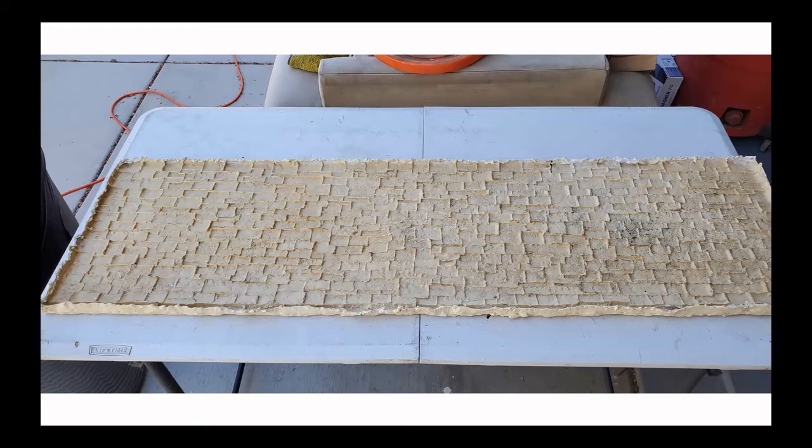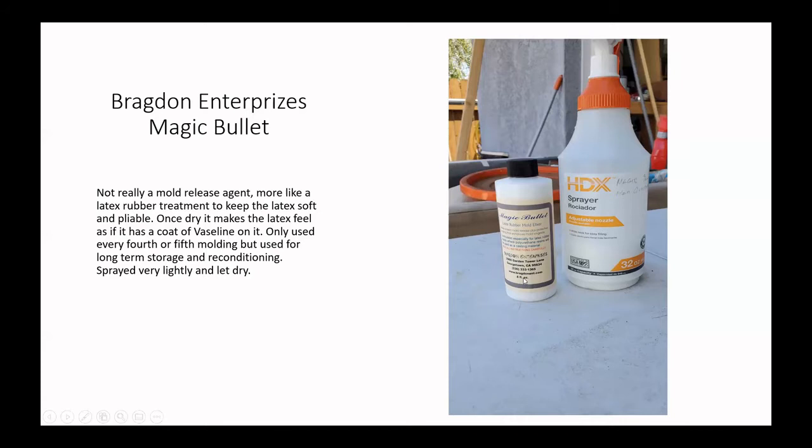And Bragdon Enterprises has this material called Magic Bullet, and it's basically feels like Vaseline once it's dry. I use it on the molds when I first buy them. It's kind of a treatment for the latex rubber. And when I'm doing the molding with the Bragdon stuff, I only have to use about every fourth or fifth time. If I feel the mold and it feels slick like it has, you know, feels kind of like Vaseline, I don't have to reshoot it. I can just mold off.